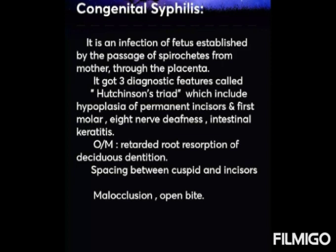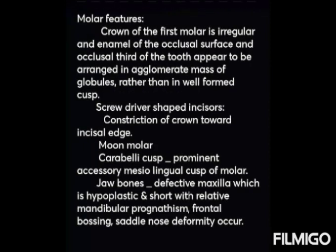In congenital syphilis, Hutchinson's triad is an important clinical feature, including hypoplasia of permanent incisors and first molars, eighth nerve deafness, and interstitial keratitis. Molar features include an irregular crown of the first molar where the enamel of the occlusal surface appears arranged in an agglomerate mass of globules rather than well-formed cusps. There is also a screwdriver-shaped incisor with constriction of the crown toward the incisal edge.